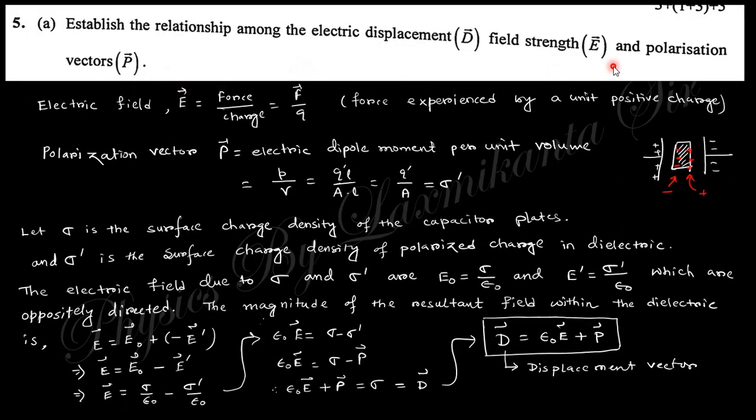Next question: establish the relationship among the electric displacement D, field strength E, and polarization vector P. Electric field is force per unit charge. Polarization is the dipole moment per unit volume, so dipole moment is charge times distance, and volume is area times distance. This charge per area is σ, the surface charge density of the applied field, and the surface charge polarized in the dielectric material.